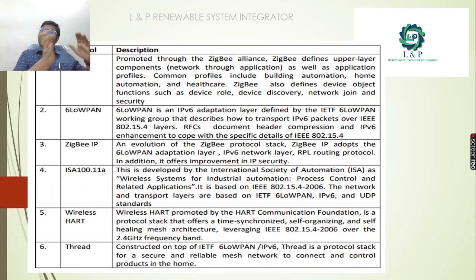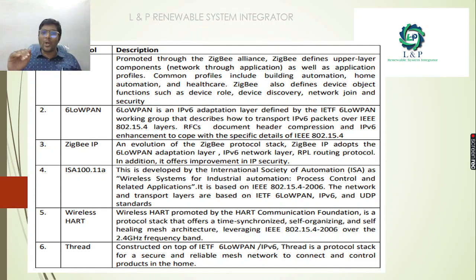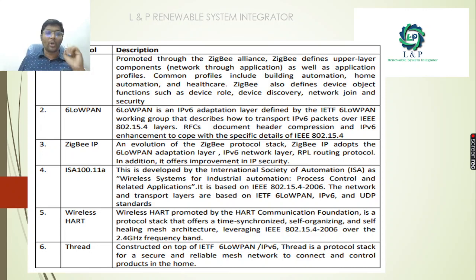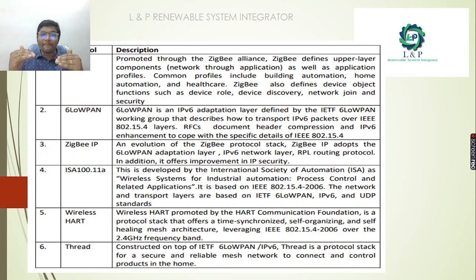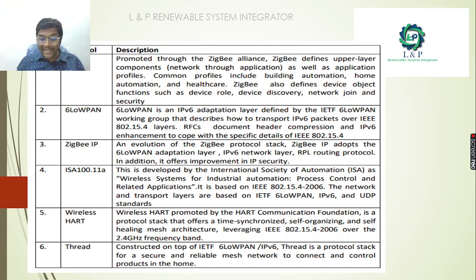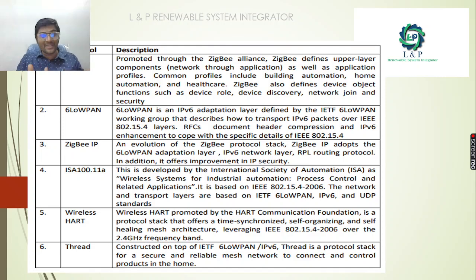Now let's look at other protocols and their uses. ZigBee defines the upper layer components and is used for building automation, home automation, and in the healthcare industry. The next protocol is 6LoWPAN, which is an adaptation over the IPv6 network. ZigBee IP is an advancement over 6LoWPAN and IPv6, also incorporating RPL routing protocols — meaning ZigBee IP adopts IPv6 packets and RPL routing protocols.